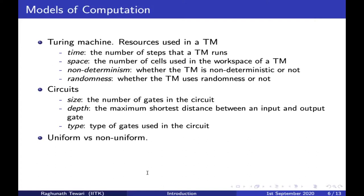A very fundamental difference between these two models is what is called uniform versus non-uniform models. A Turing machine is a uniform model of computation and a circuit is a non-uniform model. A uniform model is where you have a single machine for all input lengths.